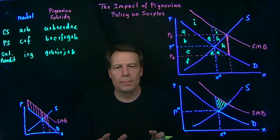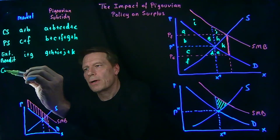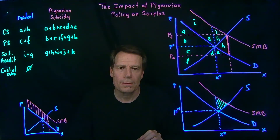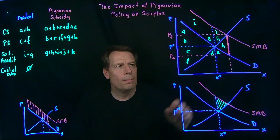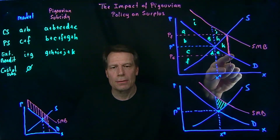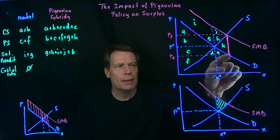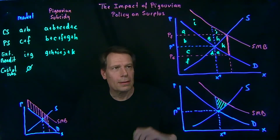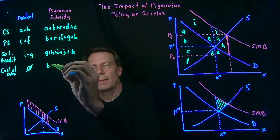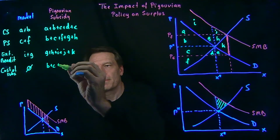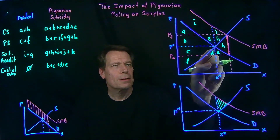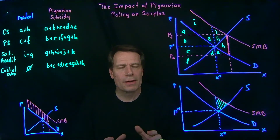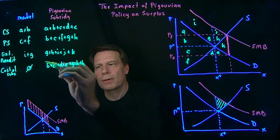Finally, we have to keep track of the cost of the subsidy. The cost is zero if there's no subsidy. But when we impose the subsidy, we're paying this amount per unit for all units produced. Multiplying the per-unit cost of the subsidy times the quantity of output gives us this rectangle, which contains areas B, C, D, E, G, H, and K. But that's a cost, not a benefit — so all of that is negative.